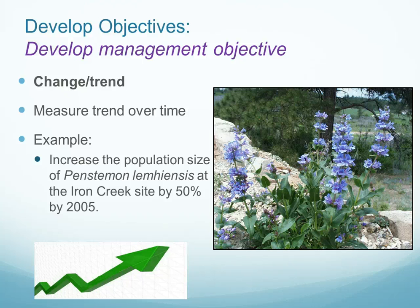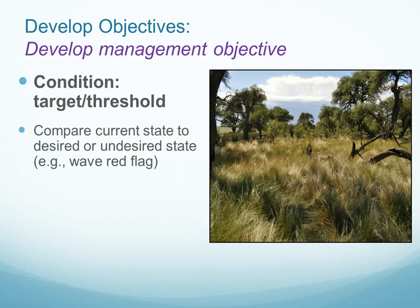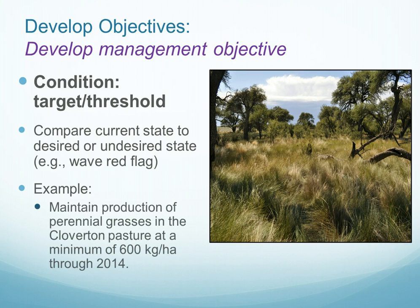The other main type of management objective is the condition objective, or a target and threshold. In this case, we often want to compare the current state to a desired or an undesired state, detecting the status so that we could raise a red flag and implement management actions. The example given here is to maintain the production of perennial grasses in a particular pasture at a minimum of 600 kilograms per hectare through the year 2014.